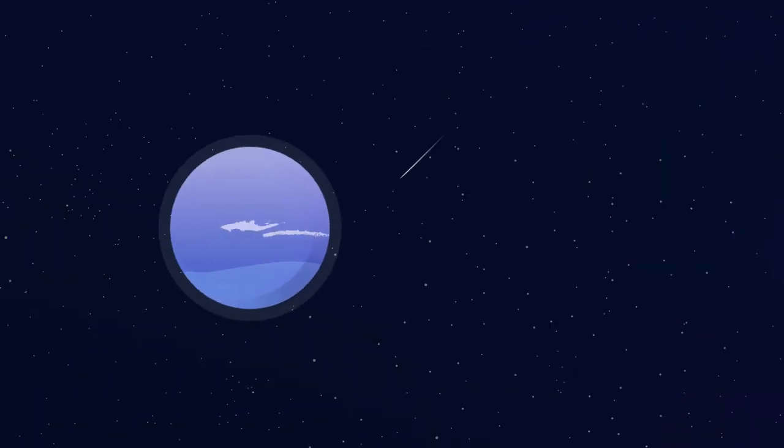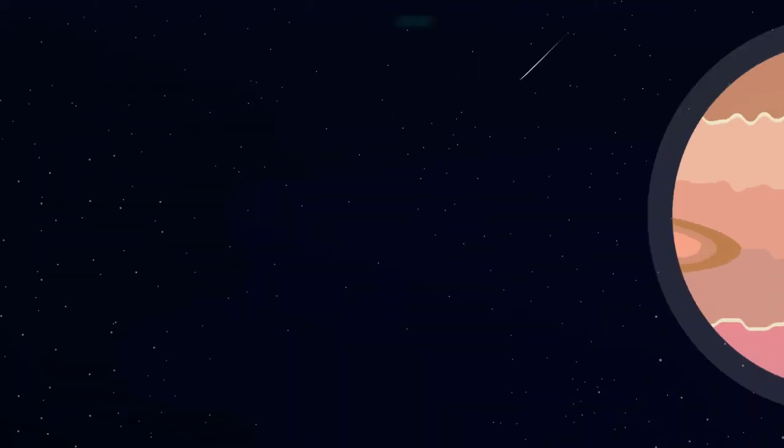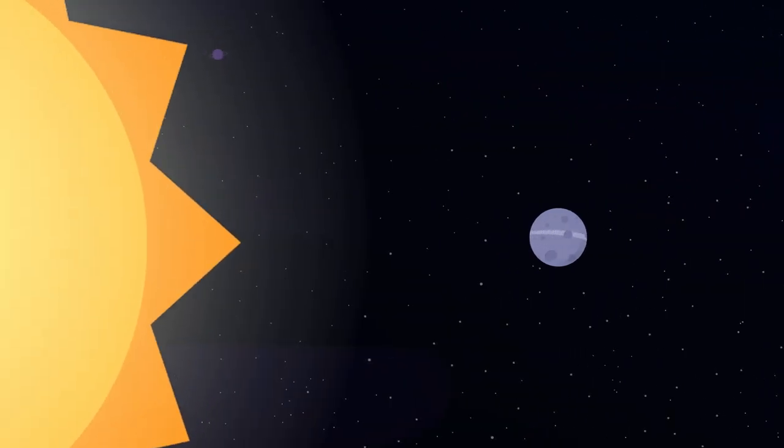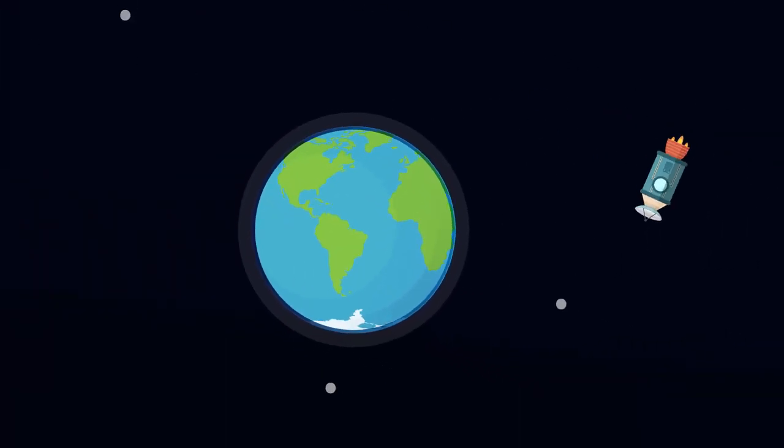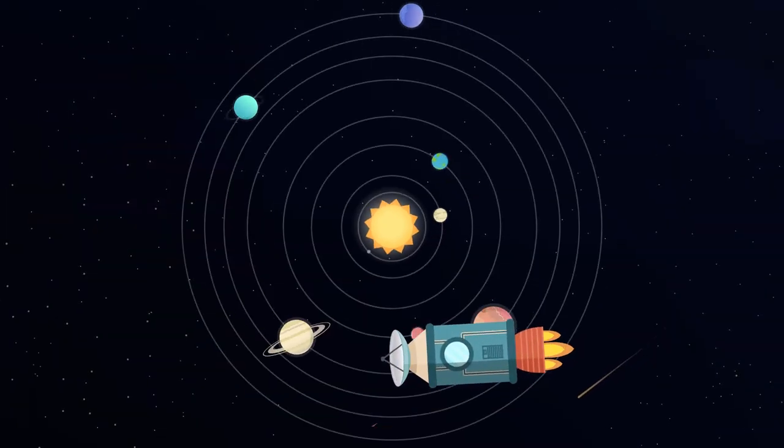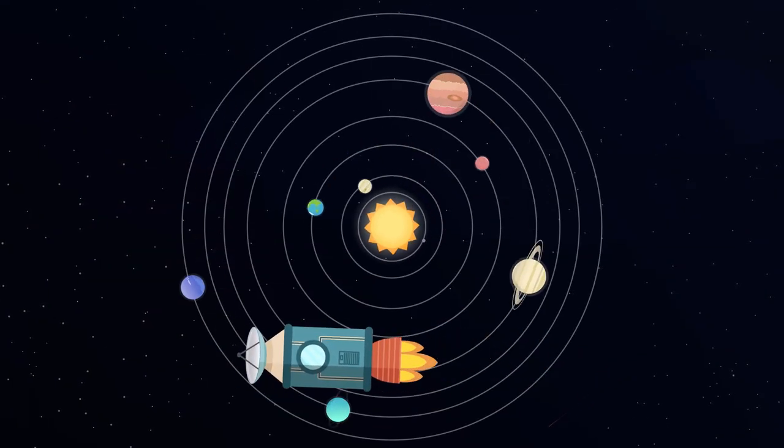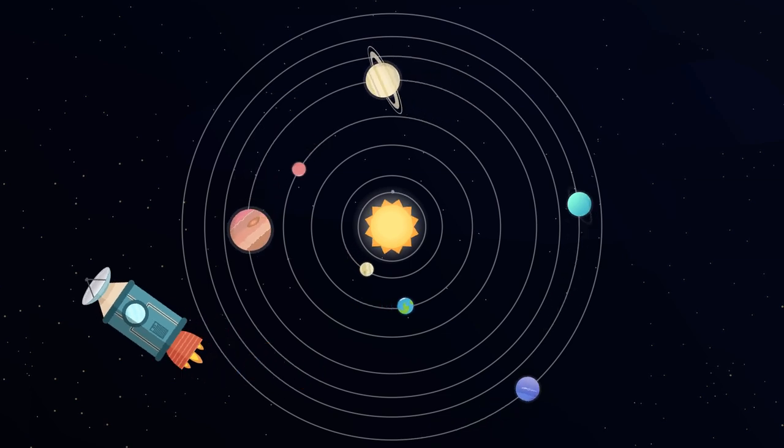Outer space is a vast, dark place that is home to planets of all types and sizes, including the Earth. Today, aboard our spaceship, we'll be exploring all the corners of the solar system that the Earth calls its home.